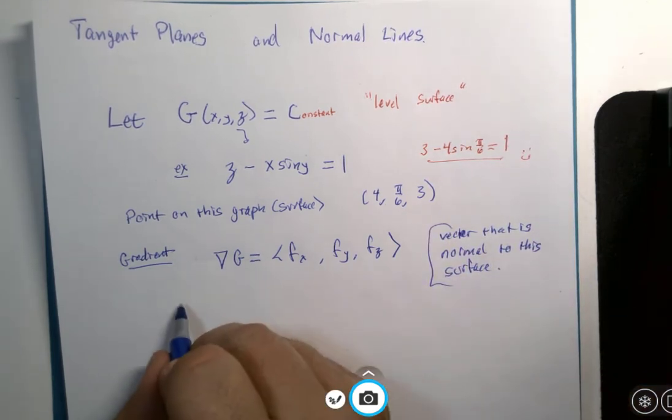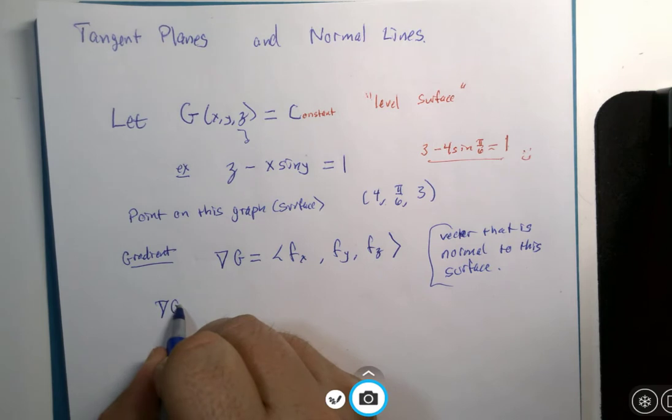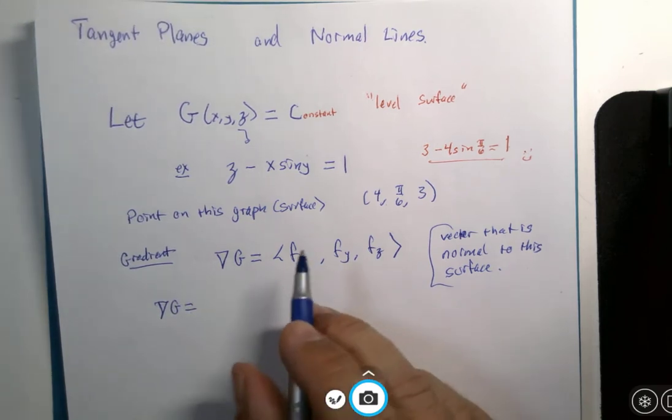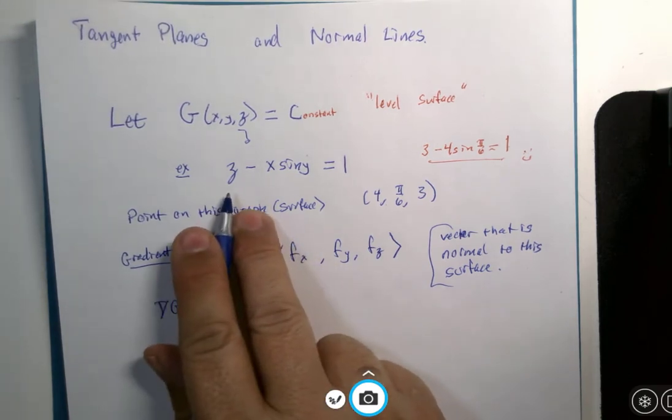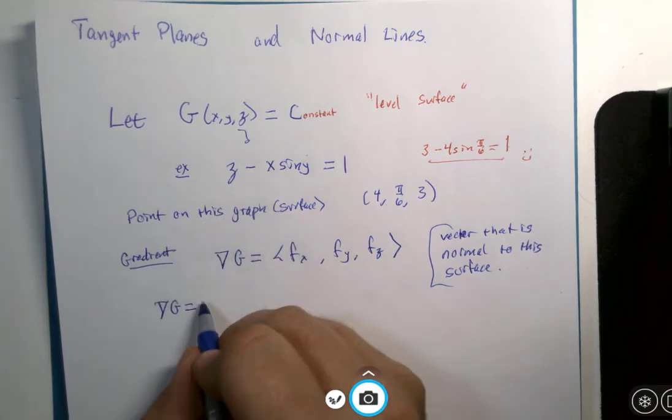So what would that look like, the gradient of G for this problem? If x is the variable, that's going to be zero minus, I guess it's minus sine y.